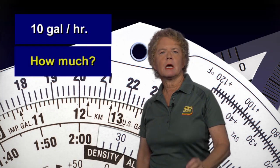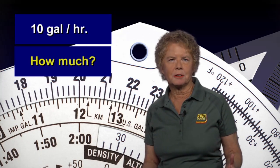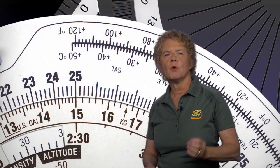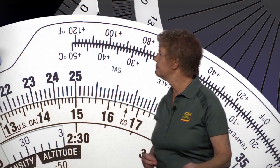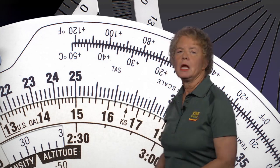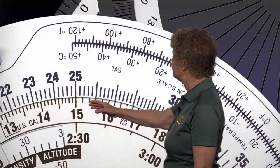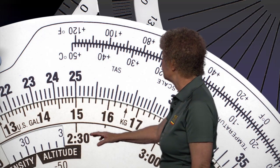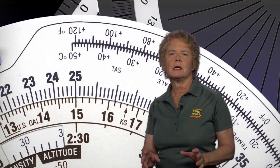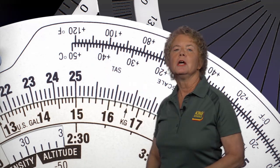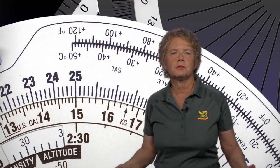Still at the same rate — 10 gallons per hour — how many gallons would we use in 2 and a half hours? Keep looking around the inner scale for 150 minutes, because 150 minutes is 2 and a half hours. Under the 15 representing 150 minutes, the far inner scale confirms that's 2 hours and 30 minutes. On the outside scale above the 15, you can read how much fuel you'll use: 25 gallons in 2 and a half hours.